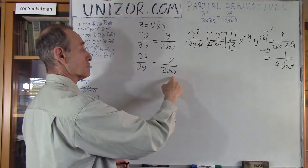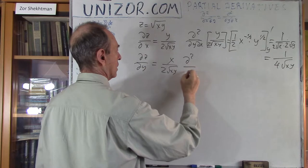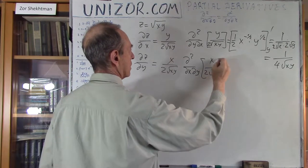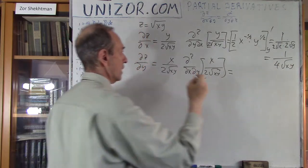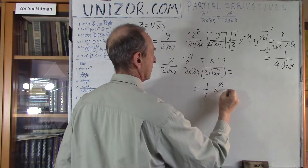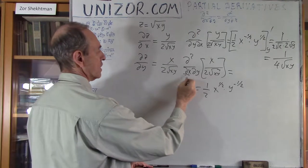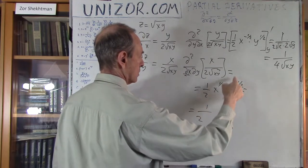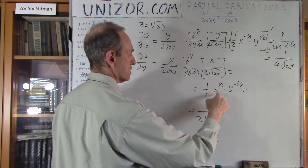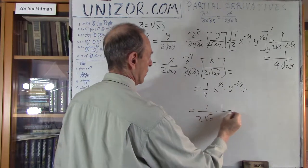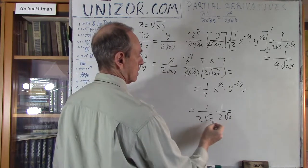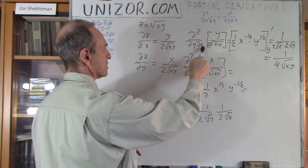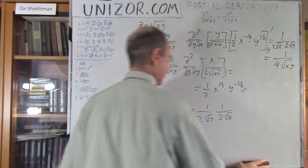Now I take the partial derivative of dz/dy by x — that is, d²/dxdy of x divided by 2 times the square root of xy. I rewrite it as x to the power of one-half times y to the power of minus one-half, and differentiate by x. The factor 2 remains, y to the minus one-half is square root of y, and the derivative of square root of x is 1 over 2 square root of x. The result is 1 over 4 square root of xy — the same as before. As you see, the mixed derivatives — first by x then by y, or first by y then by x — are the same.